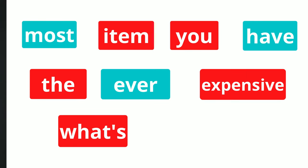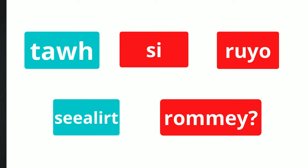Mixed-up questions. It's always good to start the class with a question. Write a good one on the board but mix up the word order. Then challenge students to reconstruct the question and discuss it. For example: 'Most item, you have the ever-expensive, what's bought?' Alternatively, write a question on the board but this time scramble the letters of each word: 'To, si, ryo, si, lil, romi.'